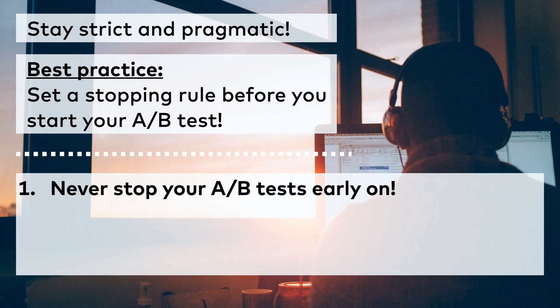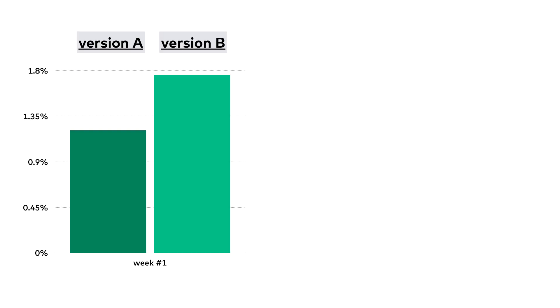Number 1: stopping the A-B test too early. Never stop your A-B tests early on. If you have decided that you want to run your experiments for 3 weeks, for instance, stick with it and only stop it when it has indeed run for 3 weeks — even if you see that your version B seemingly beats version A right in the first week of the test.